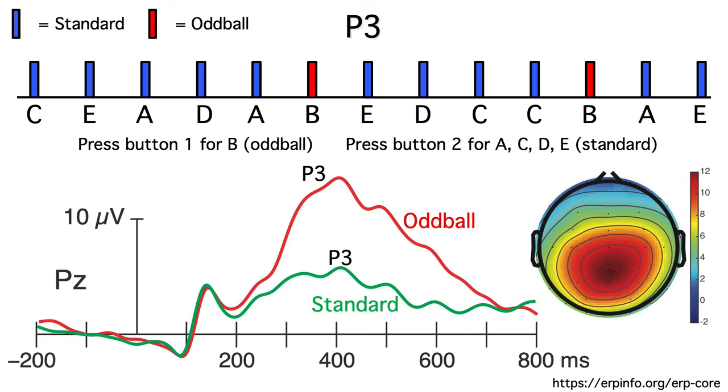In general, the amplitude of the P3 is inversely related to the probability of the stimulus. If we use probabilities of 10% and 90% rather than 20% and 80%, we'd get an even bigger P3 for the oddballs and an even smaller P3 for the standards.